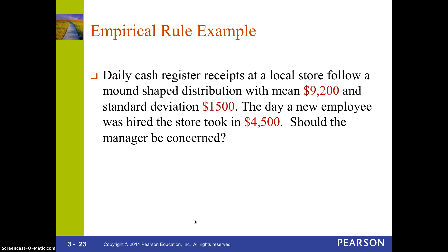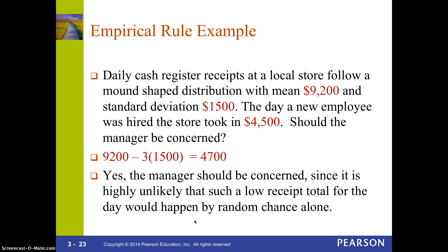If a value is within one standard deviation, that's where 68% of the data falls — not a big deal. But when you end up being far away from the mean, it's less likely to occur. In this case, $4,500 is actually more than three standard deviations from the mean. We know that 99.7% of the data is within three standard deviations — this is outside that — so this has to be one of those occurrences that very rarely occurs. You have two choices: either it was just a really slow day with nothing to do with the new employee, or you might be concerned that the new employee took some money. You can use this idea to see which way is plausible.